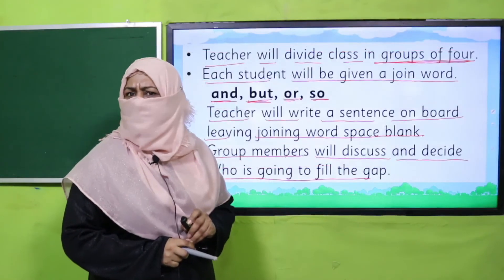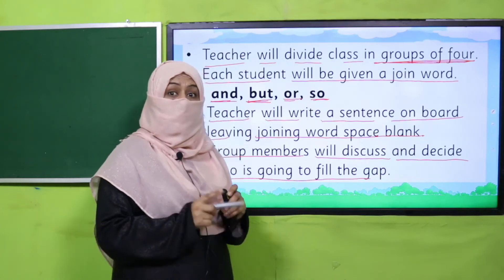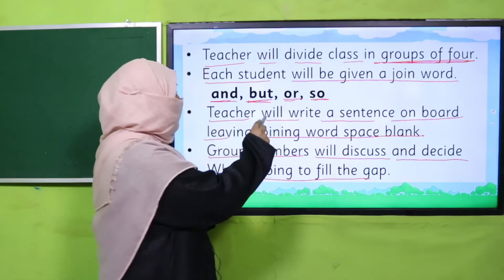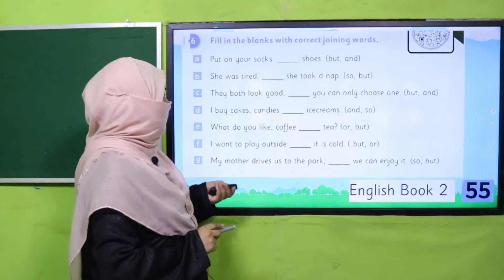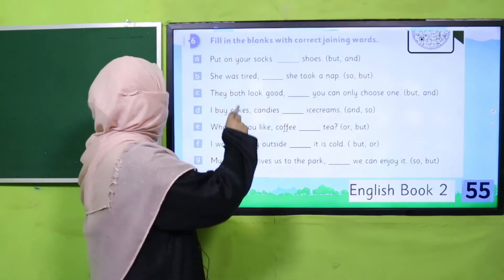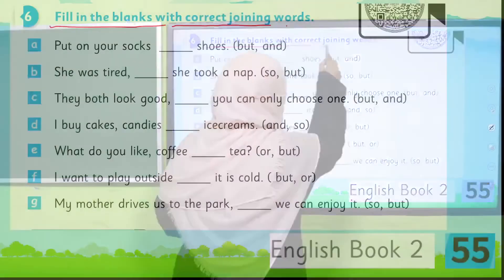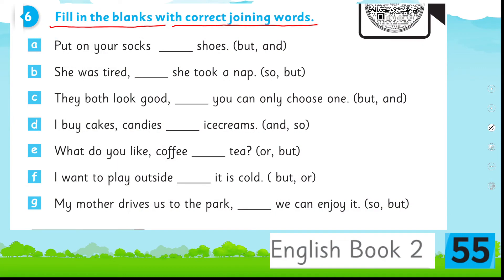Are you done with the activity? Good job! I hope now you are clear with the concept of using these four joining words. Let's practice from your book — you will fill in the blanks with the correct joining word. Read each sentence carefully and be careful in selecting the correct joining word. Pause the video, complete this exercise in your book, and then come back.